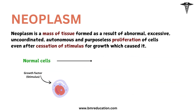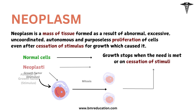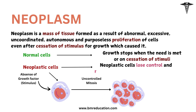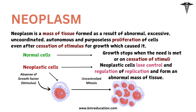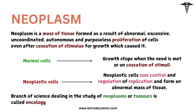Normally, growth stops when the need is met. The proliferation and maturation of cells in normal adults is controlled. As a result, some cells proliferate throughout life — these are labile cells. Some have limited proliferation — these are stable cells — while others do not replicate, which are permanent cells. On the other hand, neoplastic cells lose control and regulation of replication, forming an abnormal massive tissue. Even if whatever triggered the growth is gone, the growth continues. The branch of science dealing in the study of neoplasms or tumors is called oncology.